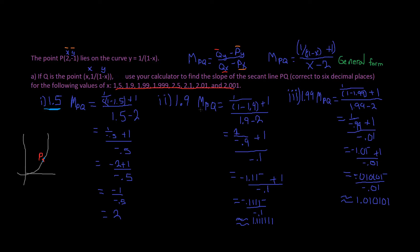For x = 1.9, we plug in the numbers and end up with approximately 1.111111. We continue to six decimal places. For x = 1.999, we're finding the slope of the secant line from P to Q, and after basic arithmetic we get approximately 1.010101.